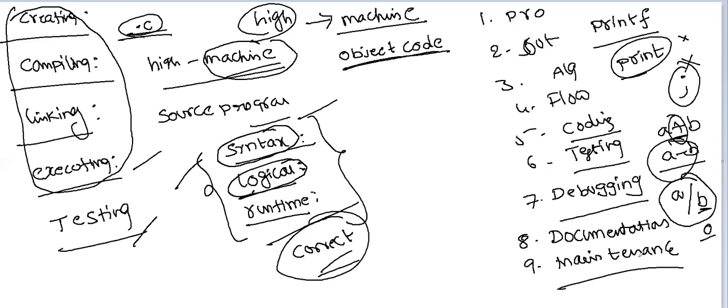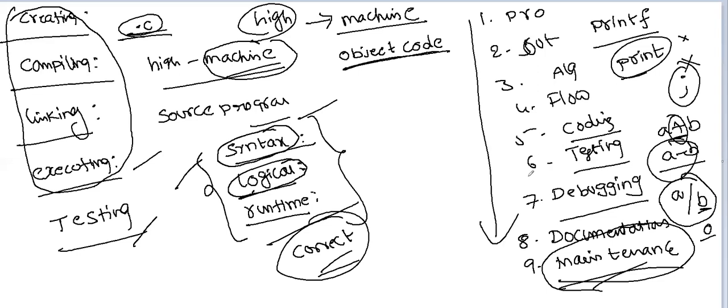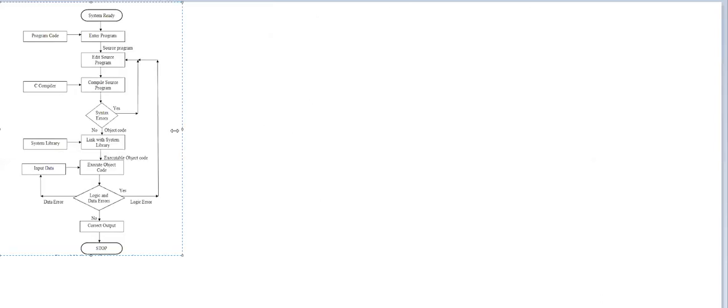Finally, maintenance. After a program is completed and delivered to the user (as software), if the customer requires any modifications, you have to perform those modifications and hand the program back to the customer. These are the program development steps involved for execution of a program. Now the entire process is represented in pictorial format.